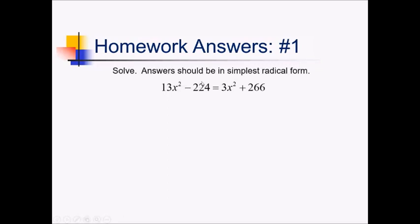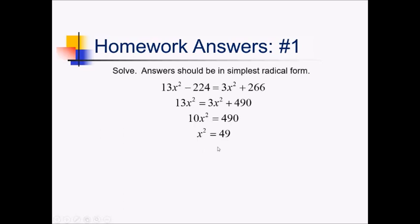So let me get the constants over on one side and the squared terms on the other. Adding 224 to the right side, 266 plus 224, that's going to be 490. And then subtracting 3x squared from both sides, that's going to leave me with 10x squared on the left side. Now I have to divide both sides by 10 to get x squared by itself, so we've got x squared equaling 49. And now I have to square root both sides of the equation, so that's going to leave me with x on the left side and a plus or minus 7 on the right side — and plus or minus 7 are our solutions.